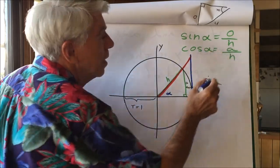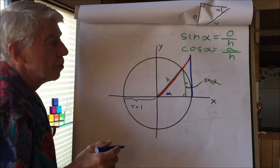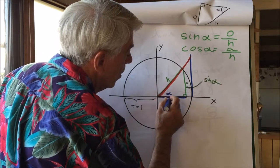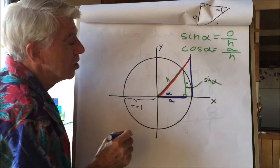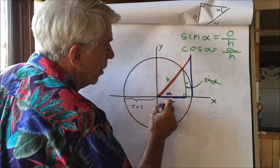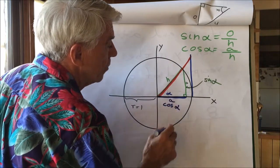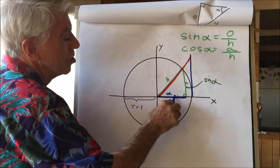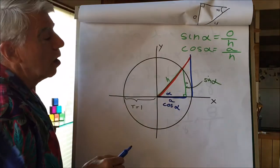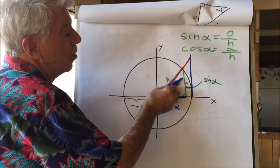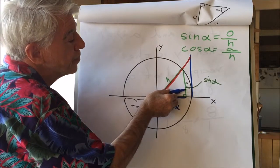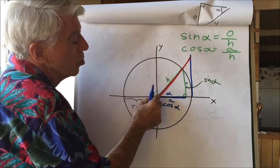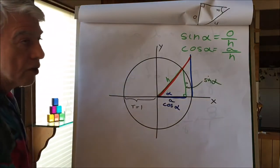Cosine of alpha is the adjacent divided by the hypotenuse. From here to here — that being the adjacent and the hypotenuse being 1 — is the cosine of alpha. We can see that as the angle gets larger and larger, the sine will get bigger and the cosine will get smaller. If the angle gets smaller and smaller, the sine will get smaller and eventually reach 0, and the cosine will get larger and eventually reach 1.